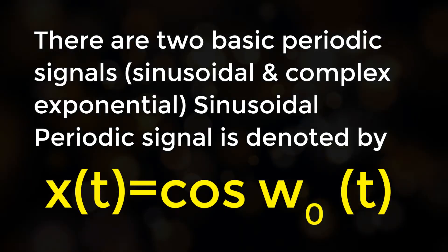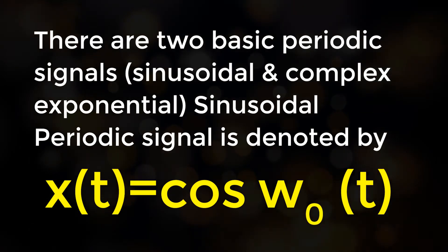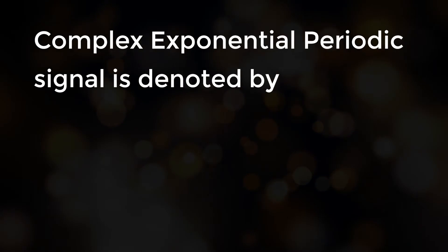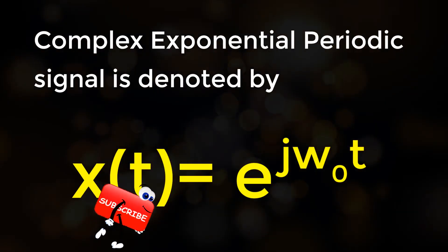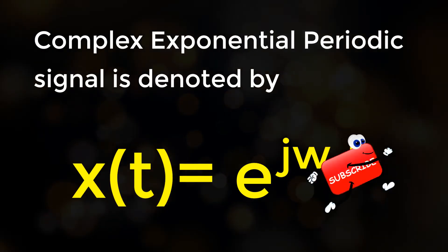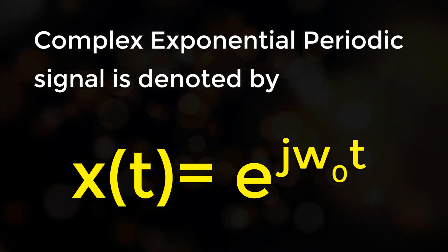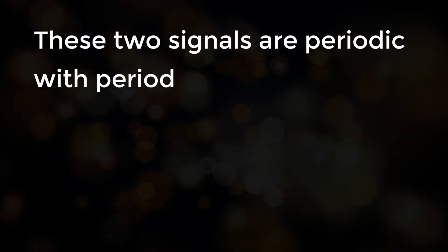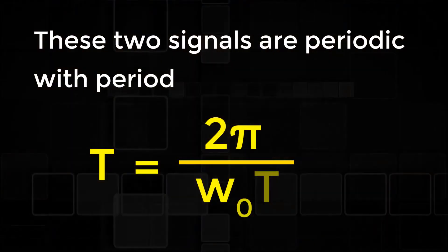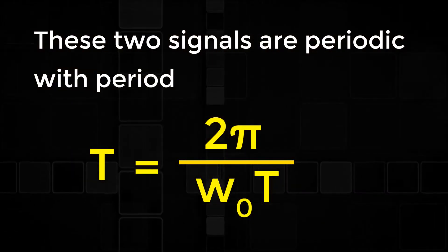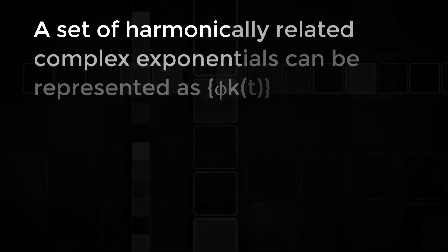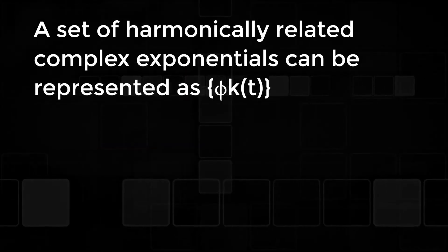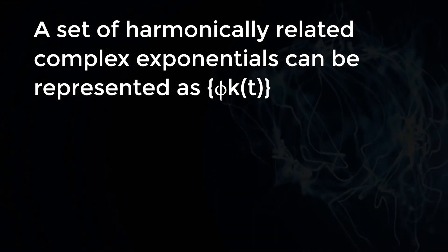There are two basic periodic signals: sinusoidal and complex exponential. The sinusoidal periodic signal is denoted by X(T) = cos(ω₀T). The complex exponential periodic signal is denoted by X(T) = e^(jω₀T). Both of these signals are periodic with period T = 2π / ω₀.